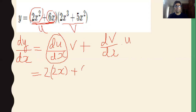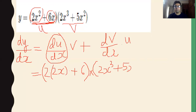The derivative of 6x will be 6. So we have found du/dx. Now we need to multiply this by v. The value of v is 2x³ plus 5x². Now for dv/dx — there are two functions inside v, so we differentiate both separately.